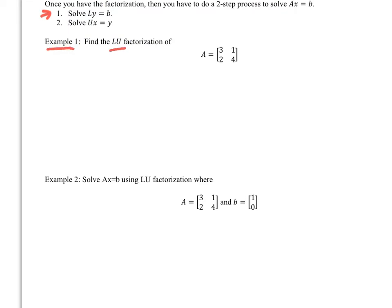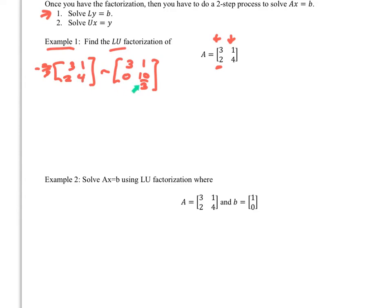Example one: find the LU factorization of matrix A = [[3, 1], [2, 4]]. To eliminate the 2 in position (2,1), multiply the top row by negative two-thirds and add to row two. Negative two-thirds times 3 gives negative 2, plus 2 gives zero. Negative two-thirds times 1 gives negative two-thirds, plus 4 gives ten-thirds. This gives us the upper matrix U.